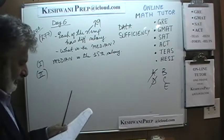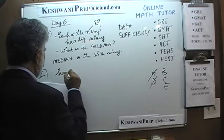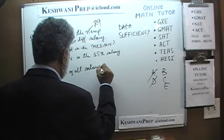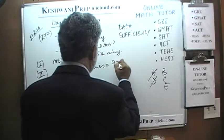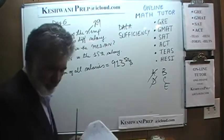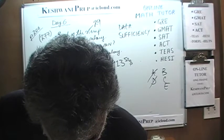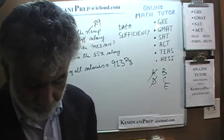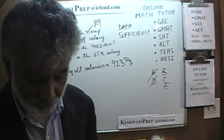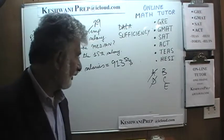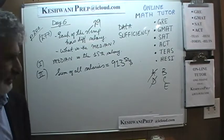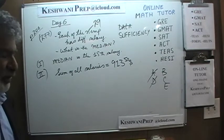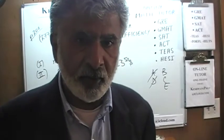The second statement tells us that the sum of all salaries is $913,500. If somebody tells us what the sum of the observations is, can we figure out the median just by looking at the sum? Obviously not. The second statement by itself is also not enough.